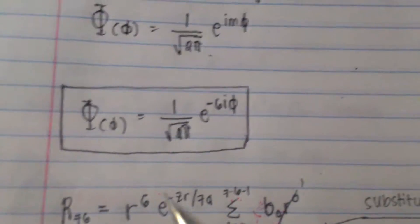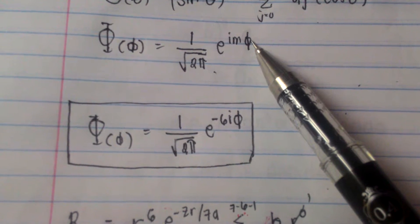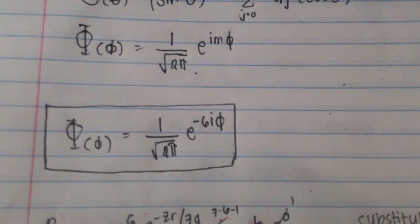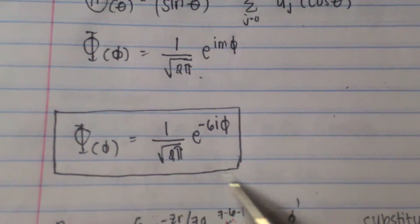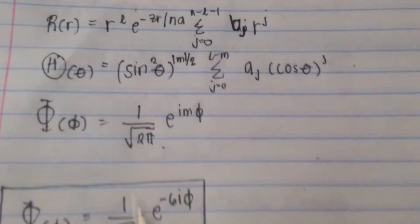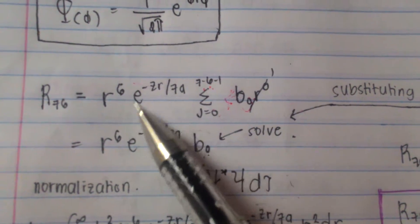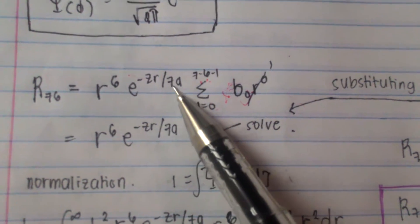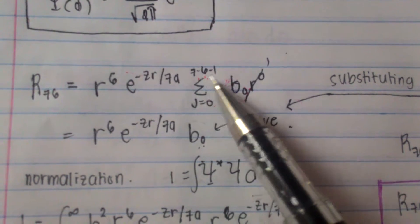First, we can solve for phi since it is the simplest formula, and we can already get phi by only substituting the value of m, which is negative 6. Next to get is the radial function. So r raised to l, which is 6, times e raised to negative zr over na or 7a, times the summation of 7 minus 6 minus 1.